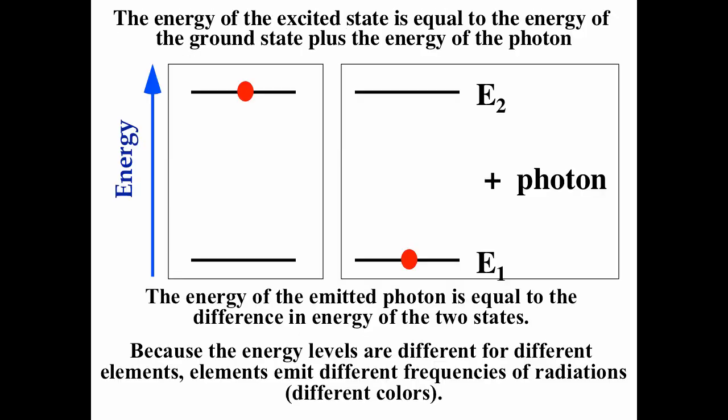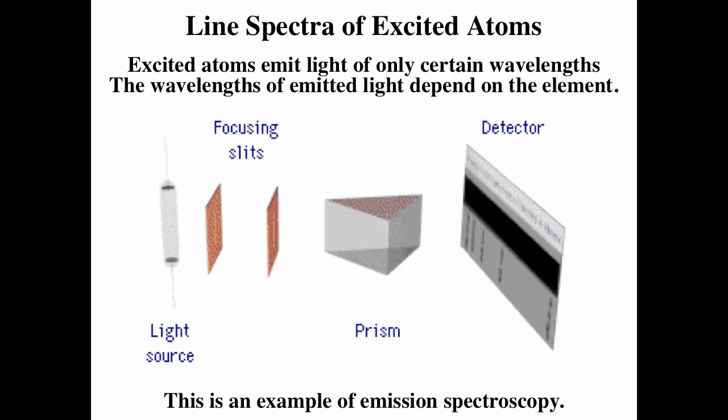In emission spectroscopy, the energy of the excited state has to equal the energy of the ground state plus the photon released. The photon has to equal the energy difference between the two states. You excite your sample using electricity, a flame, or an inductively coupled plasma. You then measure the light released by your sample, separate it out using a grating or prism, and then you get these lines. These lines correspond to the energies released from the sample, which correspond to the differences in energy of the different states.